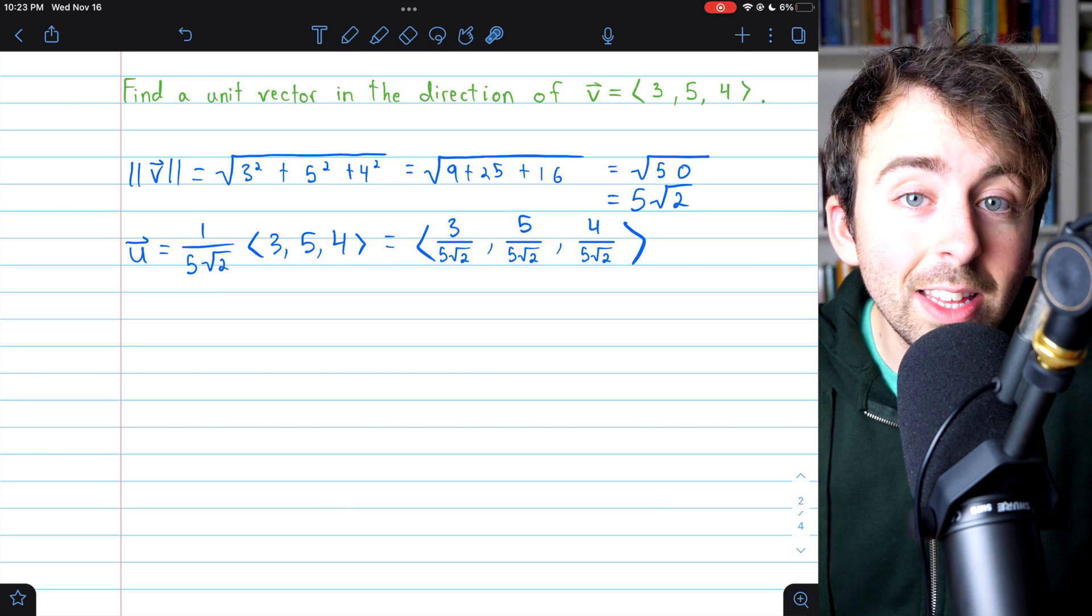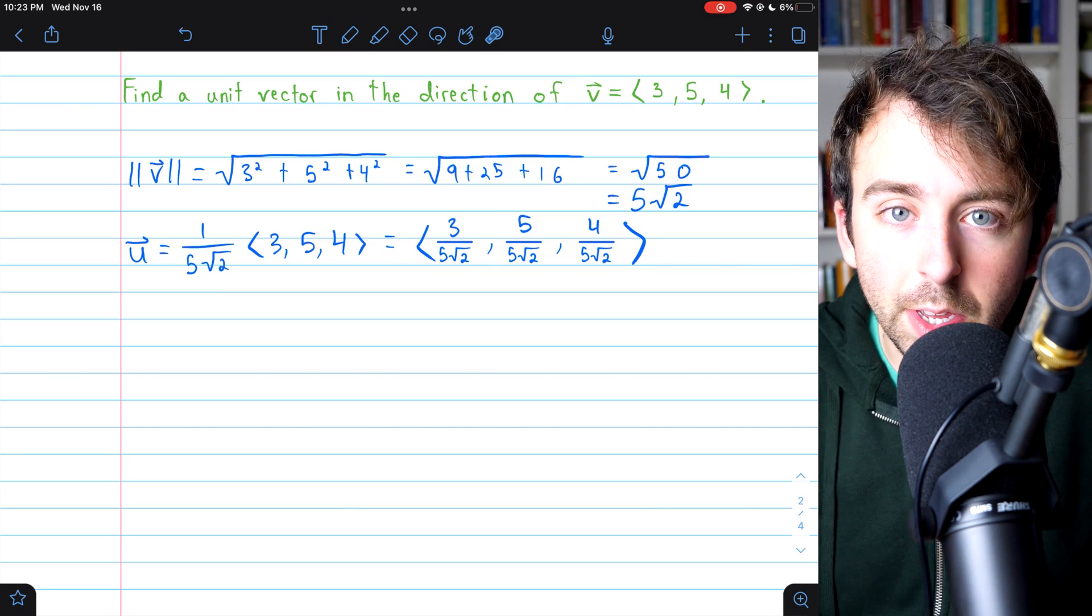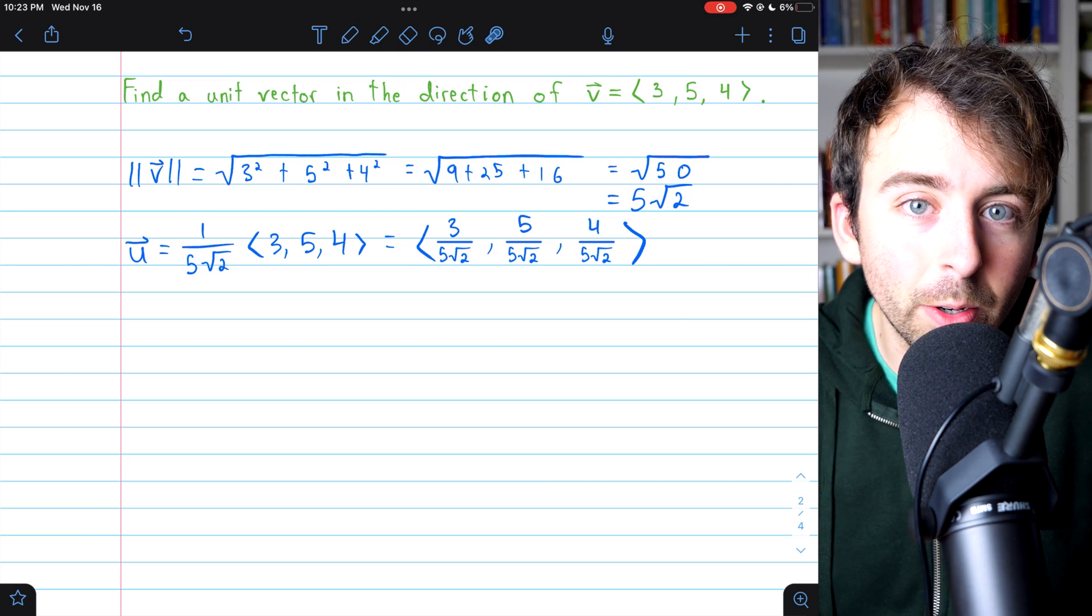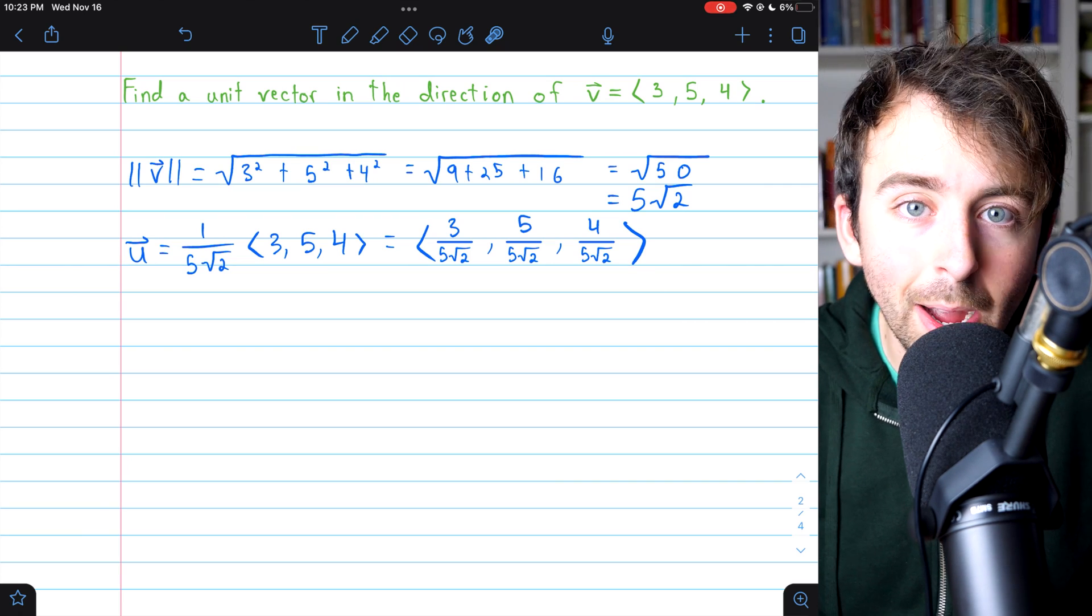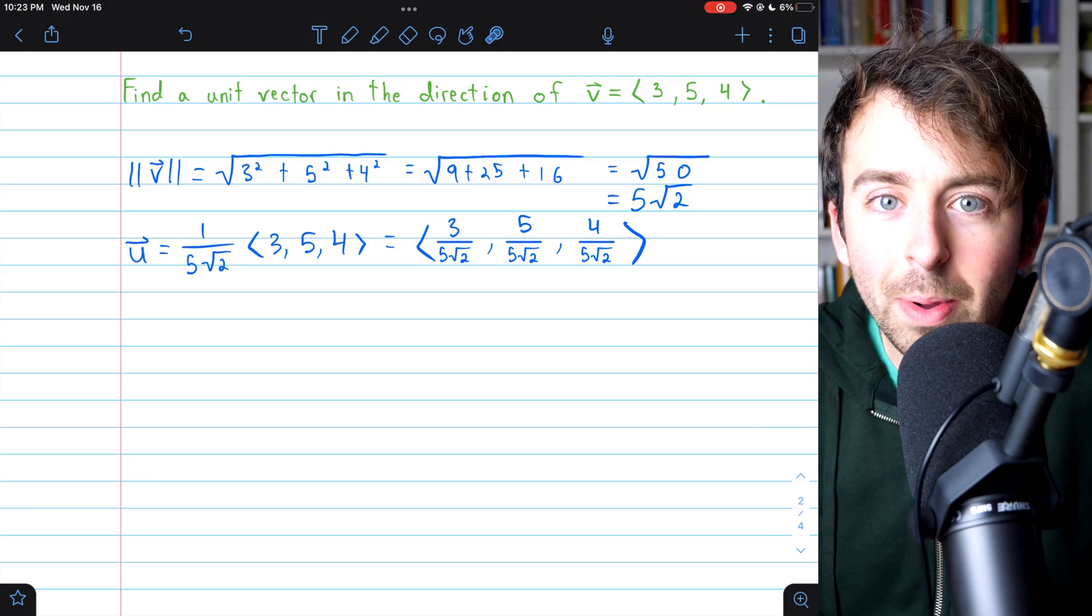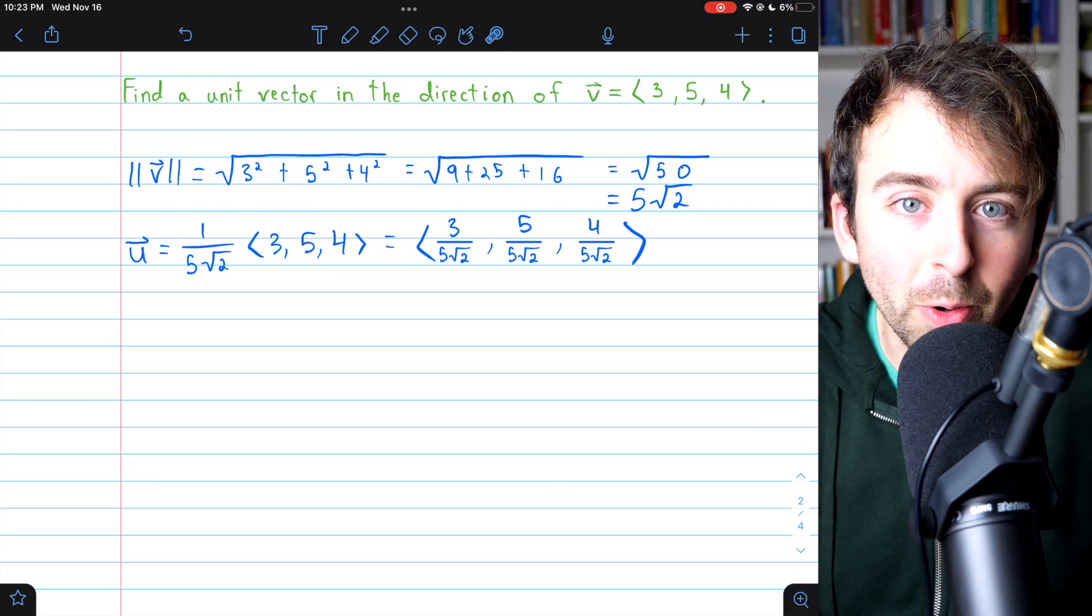But I hope this was helpful. To find the unit vector in the direction of v, as long as v is non-zero, just take v and divide it by its own magnitude. Let me know in the comments if you've got any questions or video requests.